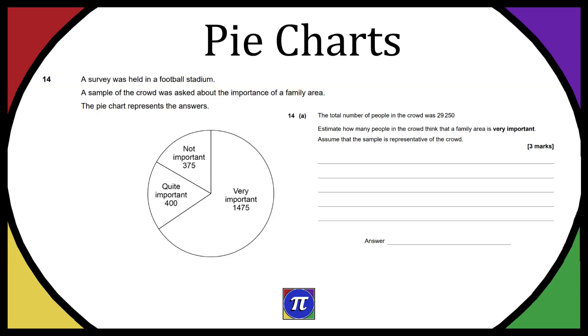So we have question 14 from the past paper, link down below, and this is a pie chart question. It states that a survey was held in a football stadium. A sample of the crowd was asked about the importance of a family area, and the pie chart represents the answers.